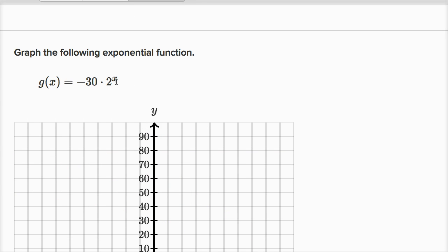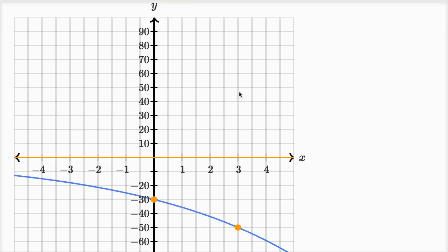Let's think about when x equals one. When x equals one, two to the first power is just two, so two times negative 30 is negative 60. When x equals one, the value of the graph is negative 60.